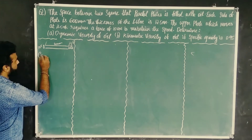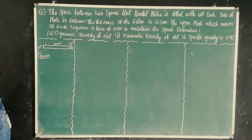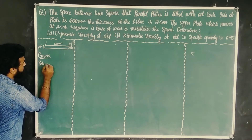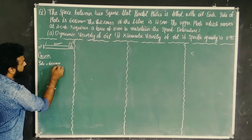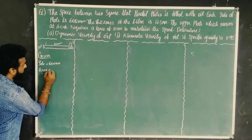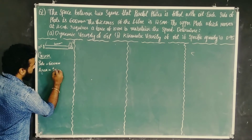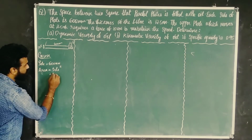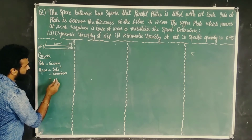Given data: the plate side length is 600 mm. The area of the square plate is side squared, so 600 into 600.